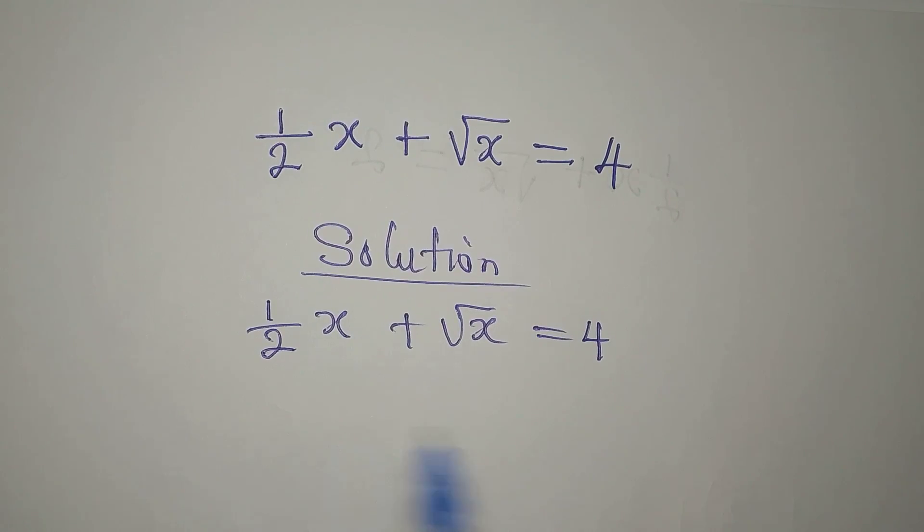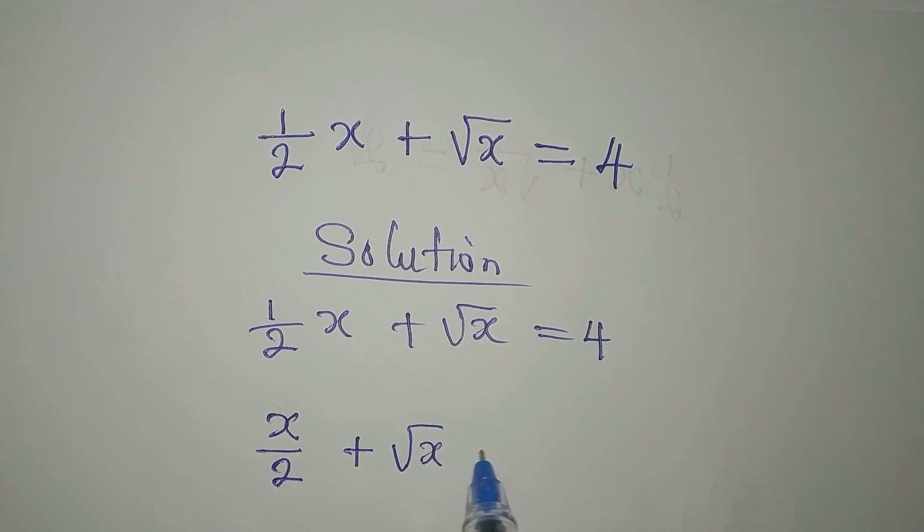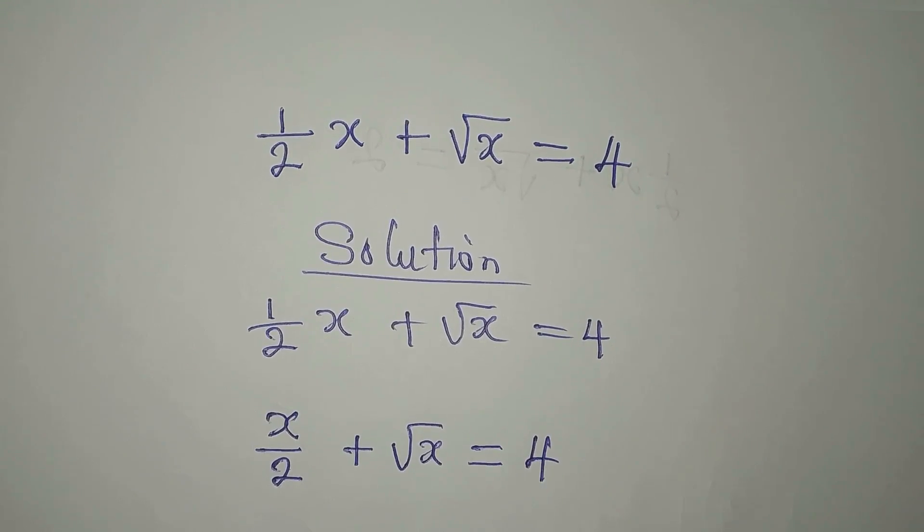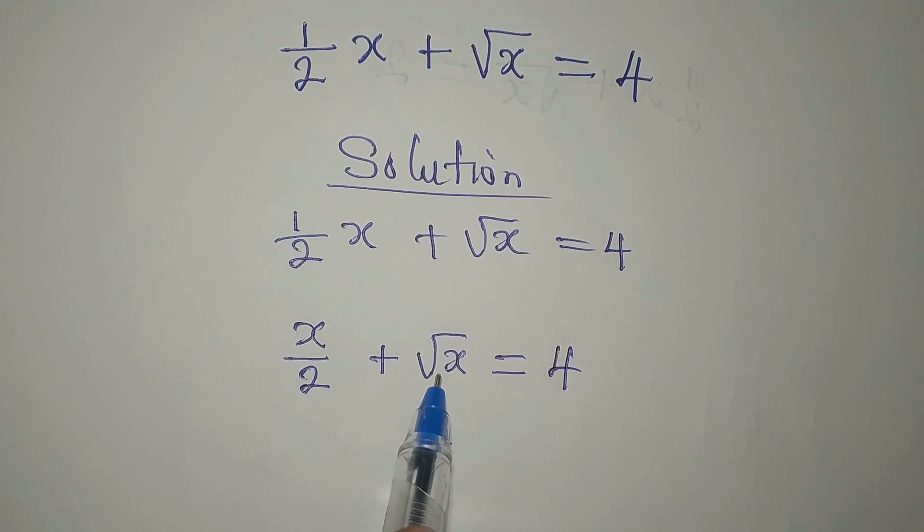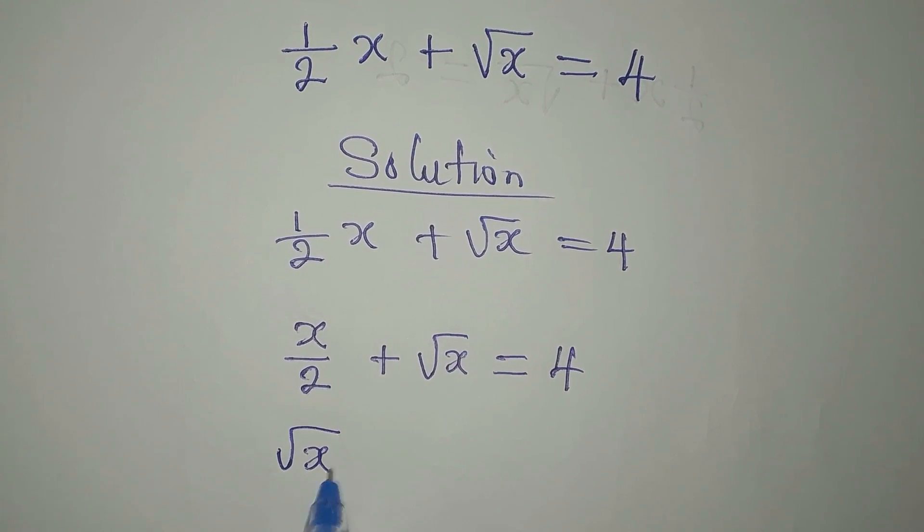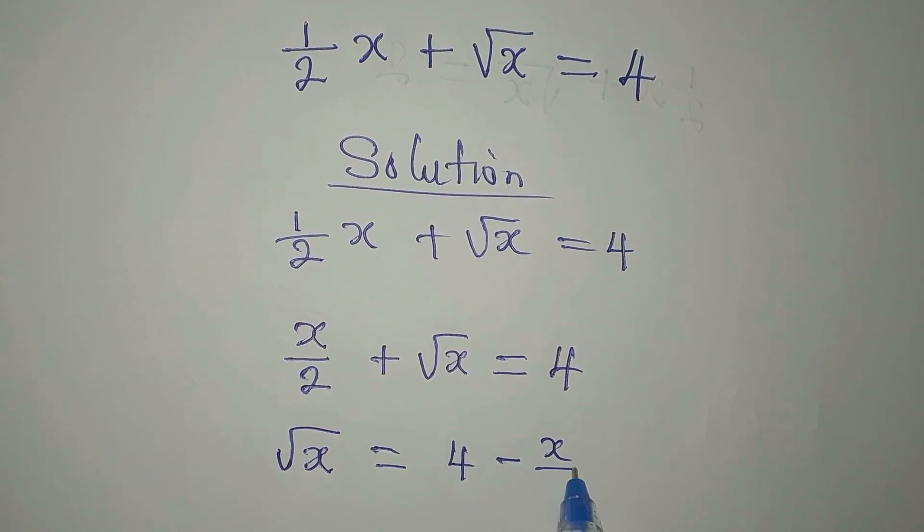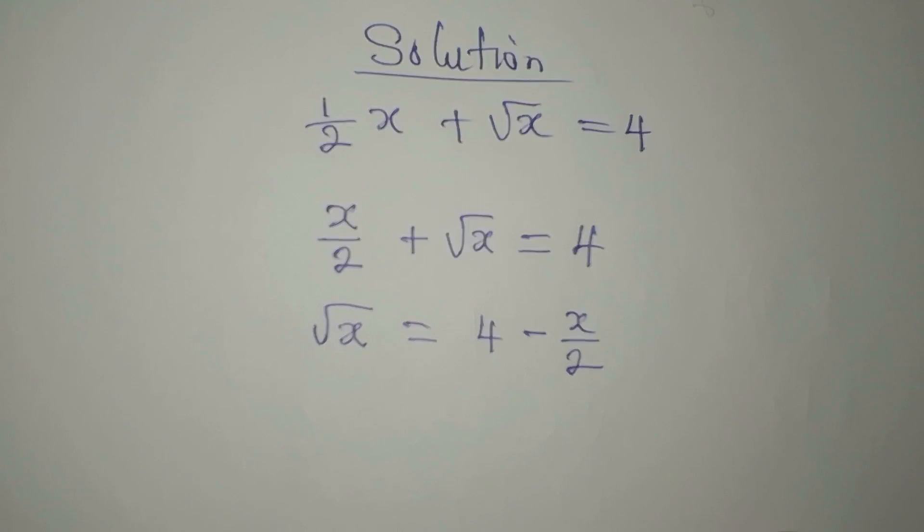One thing you must know is this right here can be written as x over 2 plus square root of x equals 4. What if I make this square root of x the subject? That means I can have square root of x equal to 4 minus x over 2. If this goes there, it becomes negative.